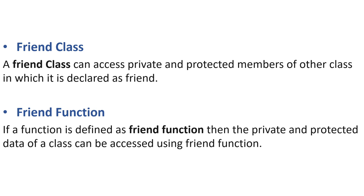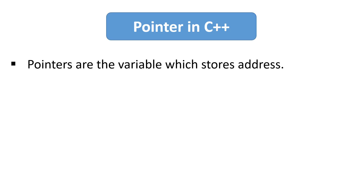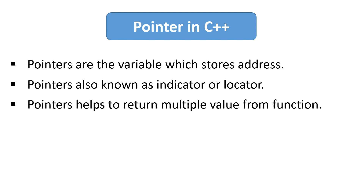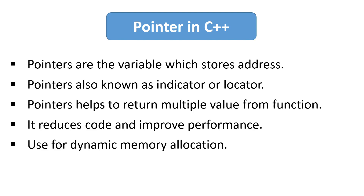Our next question is: what are pointers in C++? A pointer in C++ is like a variable used to store the address of a value. Pointers are also known as indicators or locators. Some advantages include: with pointers we can return multiple values from a function, they help reduce code, and they enhance the performance of the application. We also use pointers for dynamic memory allocation. The interviewer may ask you to write code based on pointers, so be prepared with the syntaxes.